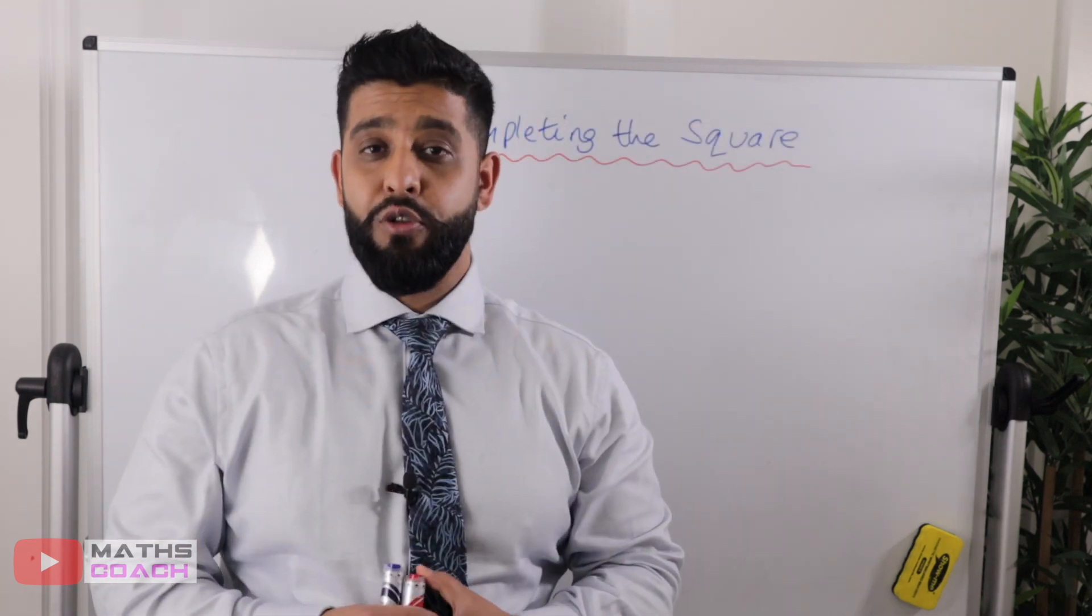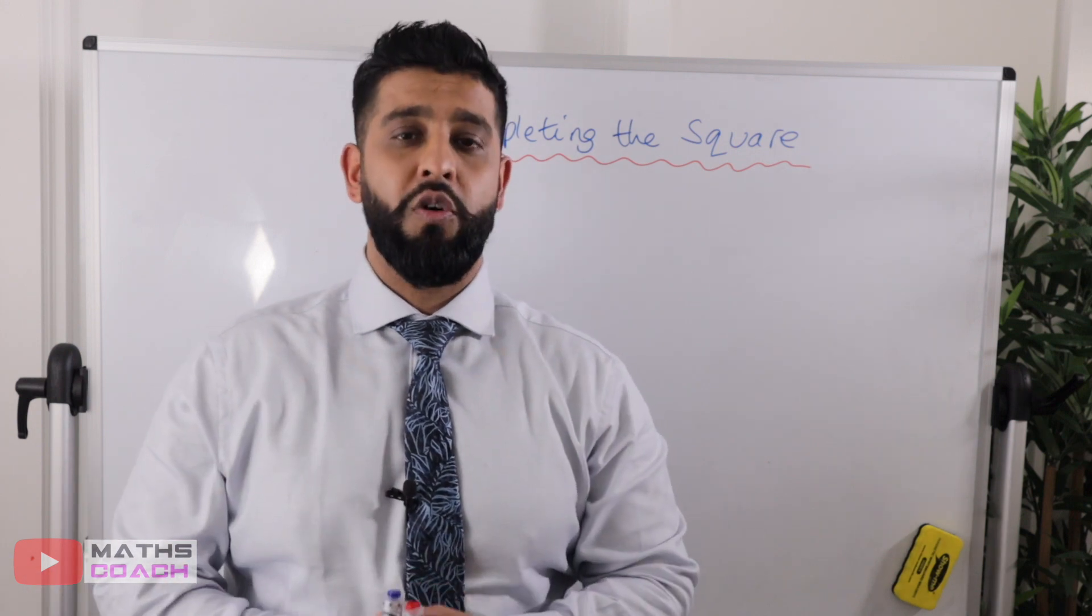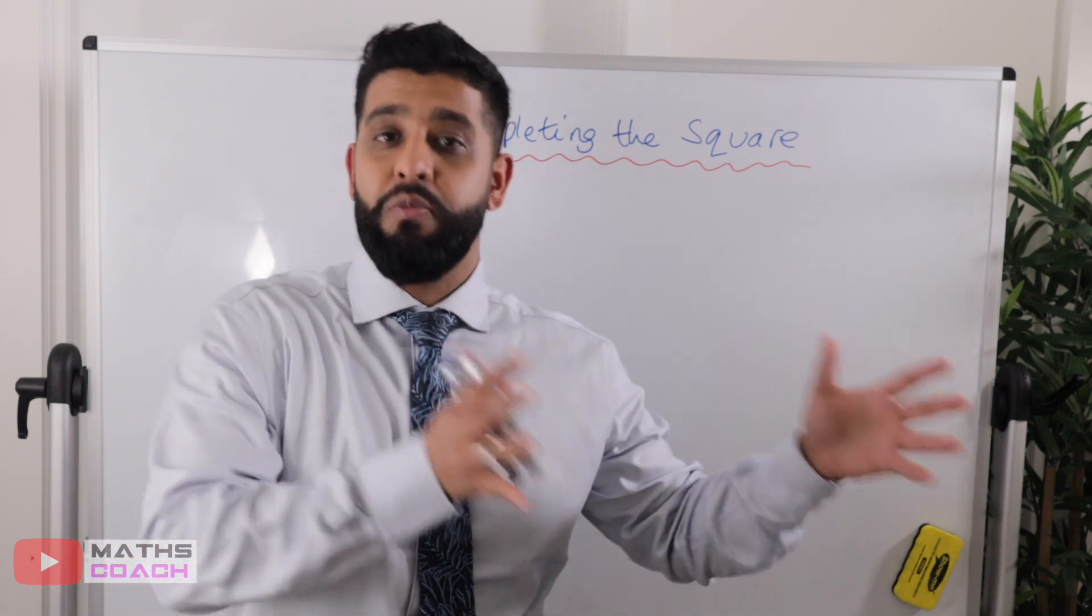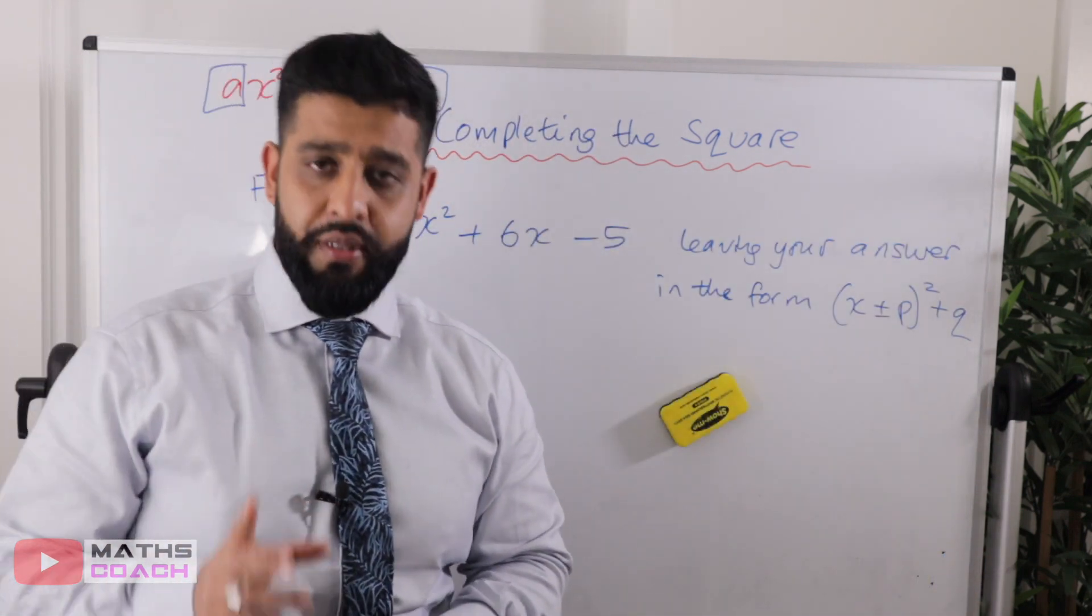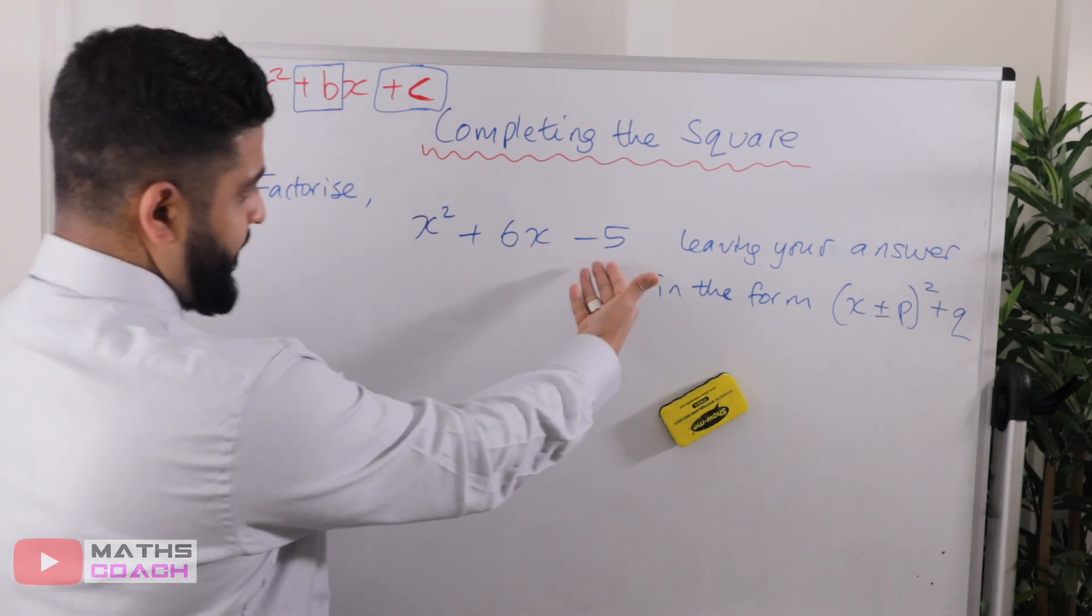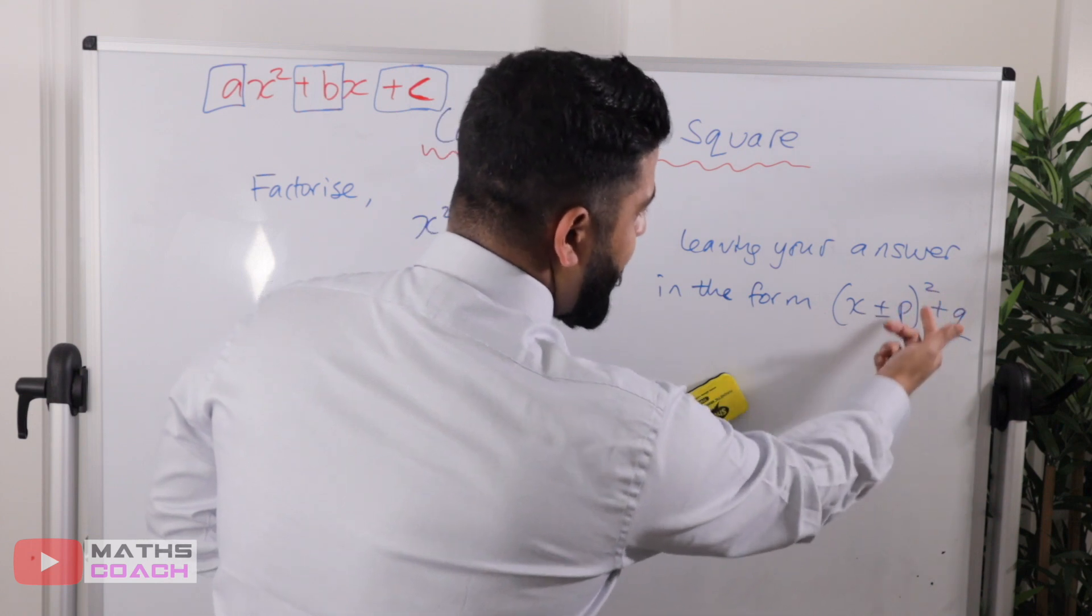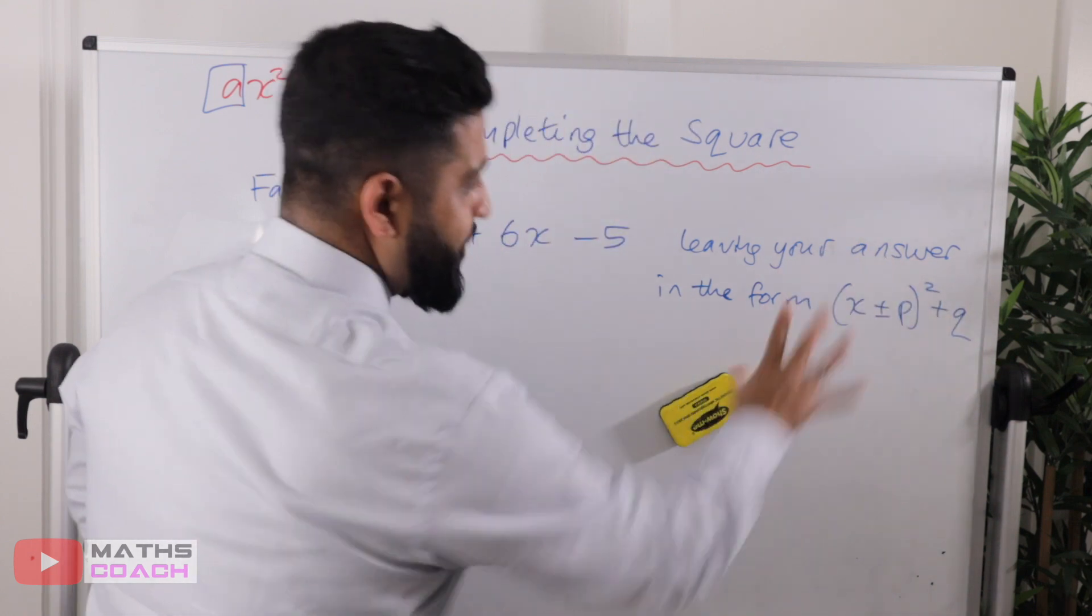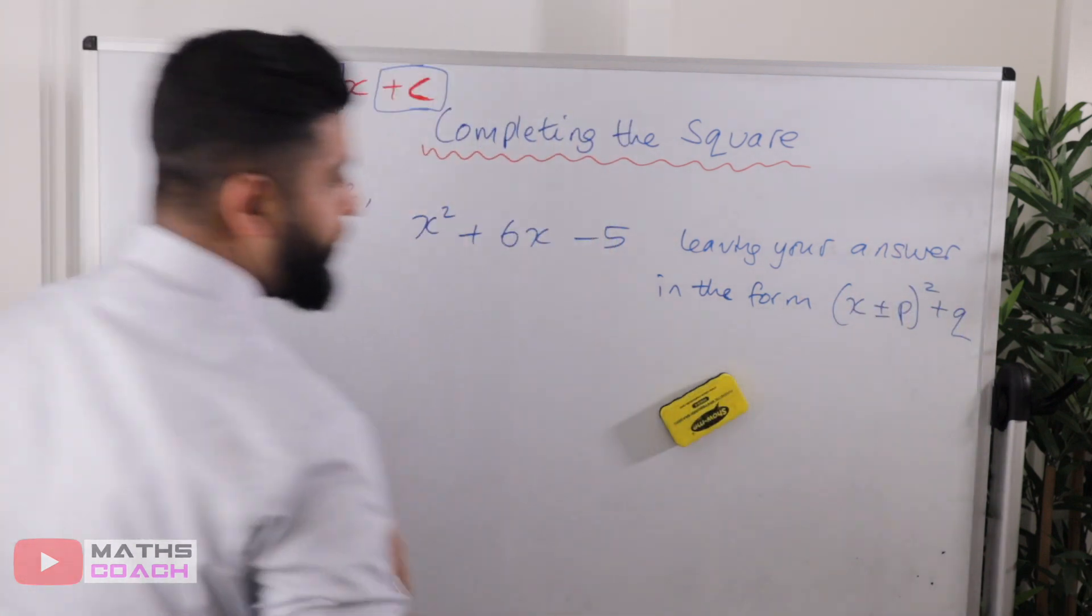Completing the square can also be used to find things like the turning points, but in this lesson we are just going to focus on how to do the actual method itself. You will know when you need to complete the square when you're told in an exam question, factorise the quadratic, leaving your answer in the form (x + p)² + q, or something similar to that, essentially in this strange format.